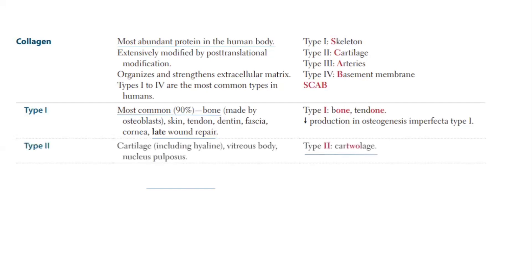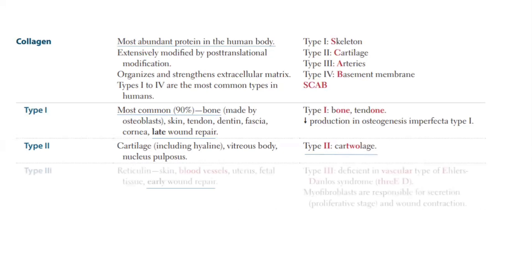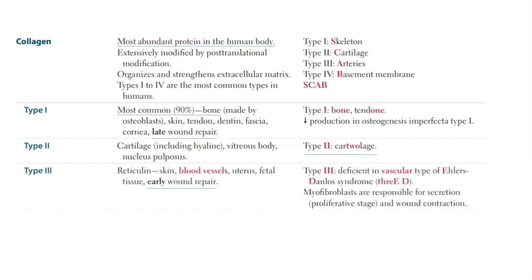Coming to Type 2 collagen: Type 1 collagen is non-cartilaginous, but Type 2 collagen is cartilaginous — especially cartilage. Remember: 2 for cartilage. Also, the cornea is associated with Type 1, but Type 2 is associated with the vitreous body.